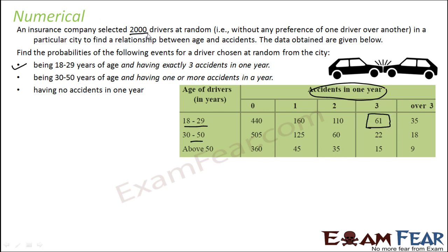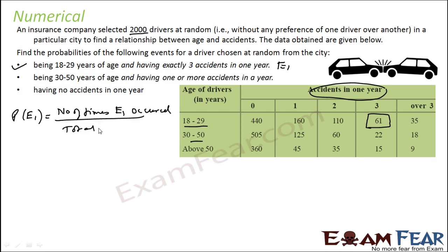There are 61 drivers out of 2,000 who are in the 18 to 29 range and met exactly 3 accidents in the year. So the probability of event E1 is number of times event E1 occurred by total events, which is 61 by 2,000, approximately 0.03.